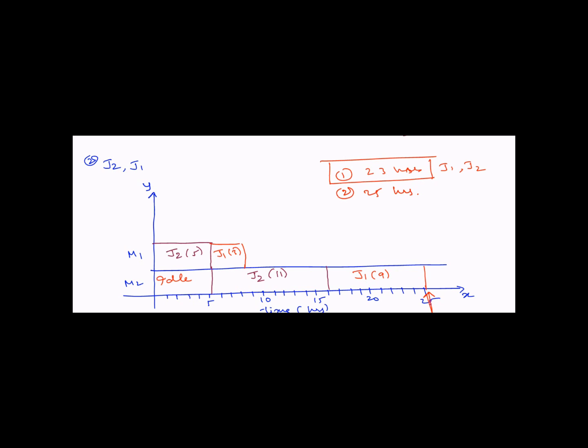The key idea is that if we can reduce the idle time on the machines, we will be able to reduce the overall production time. In this case we looked at a simple problem scheduling only two jobs on two machines. In subsequent problems we will see how to schedule more than two jobs on two machines and how we can further reduce the overall production time.